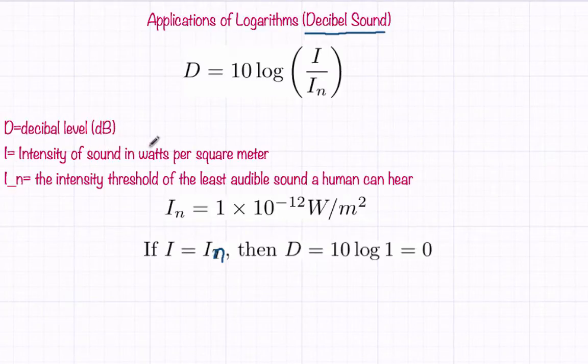i is the intensity of sound in watts per square meter. And i sub n is the intensity threshold of the least audible sound a human can hear. That is 1 times 10 to the negative 12 watts per meter squared - that's the least amount of sound we can hear.